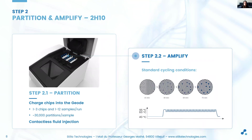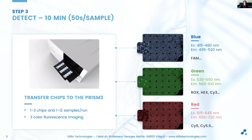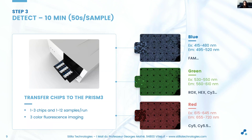Once loaded and sealed, up to three Sapphire chips — so up to 12 samples — can be placed in the first instrument, the NICA Geode, which performs both the partitioning and the PCR cycling by generating the emulsion and then heating and cooling the droplet crystals following the PCR program defined by the user. At the end of the PCR reaction, you simply need to switch the chips from the Geode to the second instrument, the NICA PRISM-3, which reads the endpoint fluorescent signal of each crystal in the three channels. Thanks to the droplets forming a crystal, one picture is enough to capture the signal of every droplet, allowing a fast scanning time of about 50 seconds per sample. When multiplexing with TaqMan probes, custom probe combinations can be chosen as long as they match the displayed wavelengths, and the main fluorophores used in molecular biology are compatible with the system.